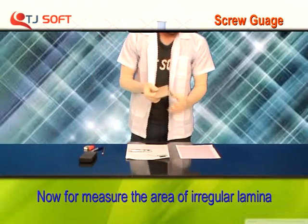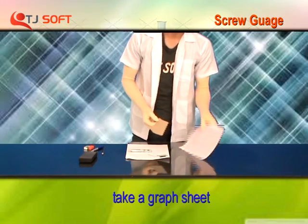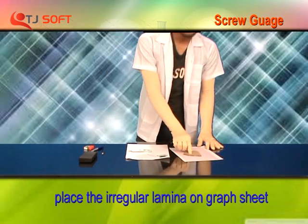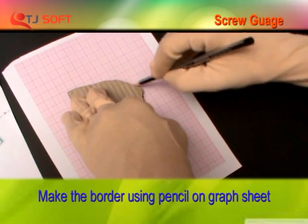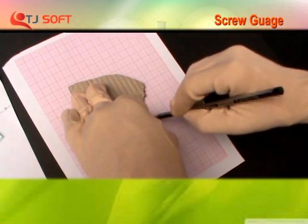Now to measure the area of irregular lamina, take a graph sheet. Place irregular lamina on graph sheet. Make the border using pencil on graph sheet.